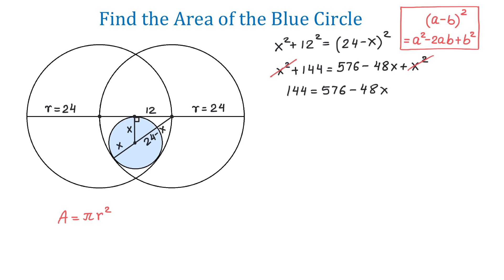Now, to solve for x, let's subtract 576 from both sides. Then, on the left side, 144 minus 576 makes negative 432.